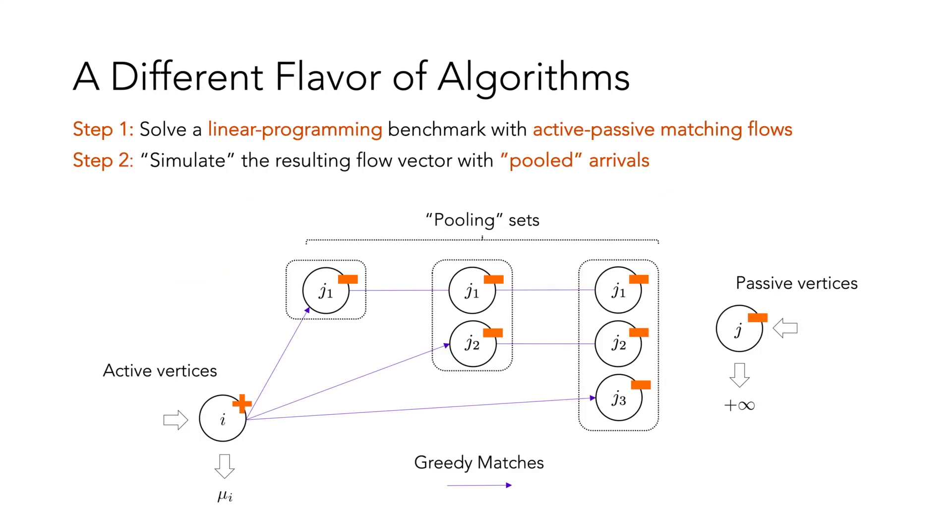Our main finding is that the design of provably good matching algorithms in this world has a unique flavor. For example, platforms can and should think about what kind of agents wait in the system.